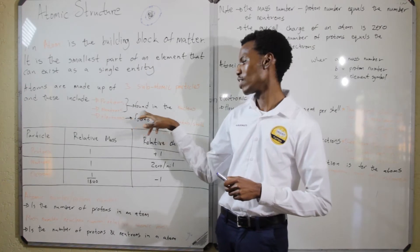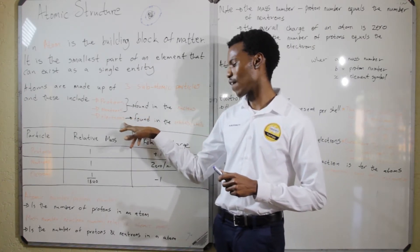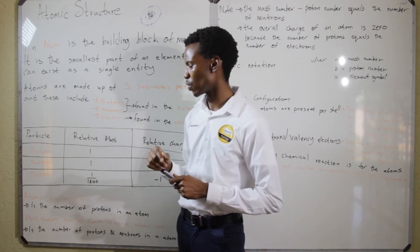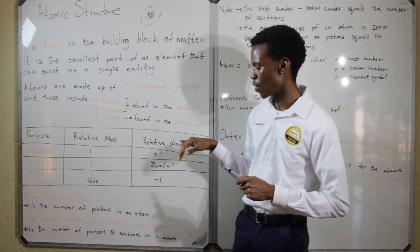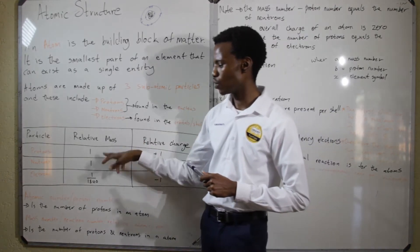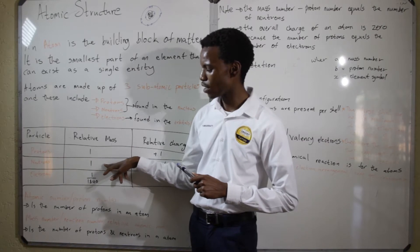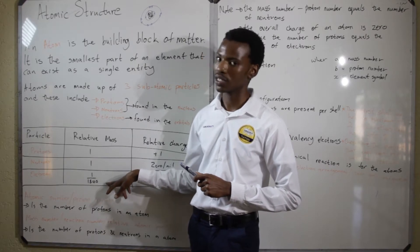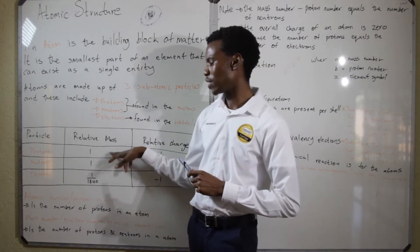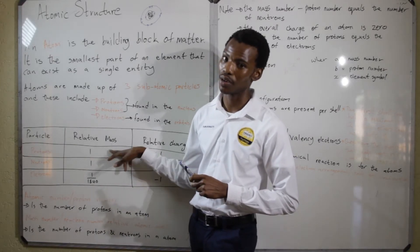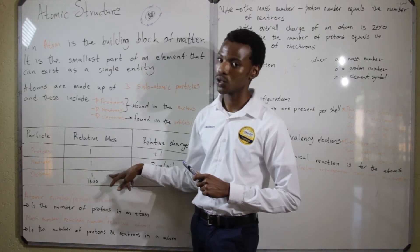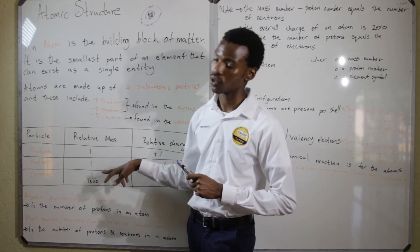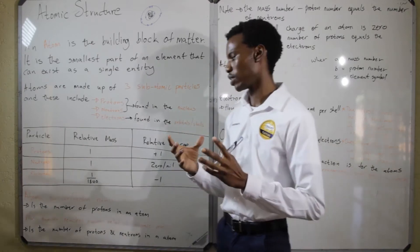The protons and neutrons are found in the nucleus while the electrons are found in the orbitals. Now the other thing you need to know about protons, neutrons, and electrons is the relative mass. The protons and neutrons have a relative mass of 1 while the electrons have a relative mass of 1 over 1840. This basically means that protons and neutrons are relatively the same in terms of their size and mass, while the electrons are significantly smaller — so small that you normally leave them out of the calculations of the mass.